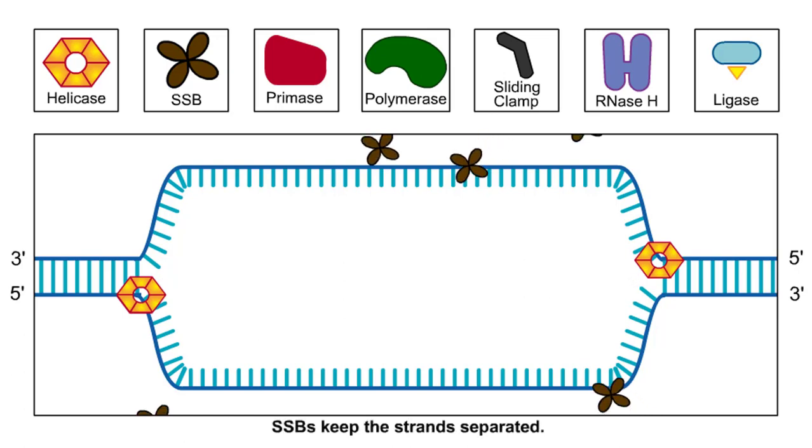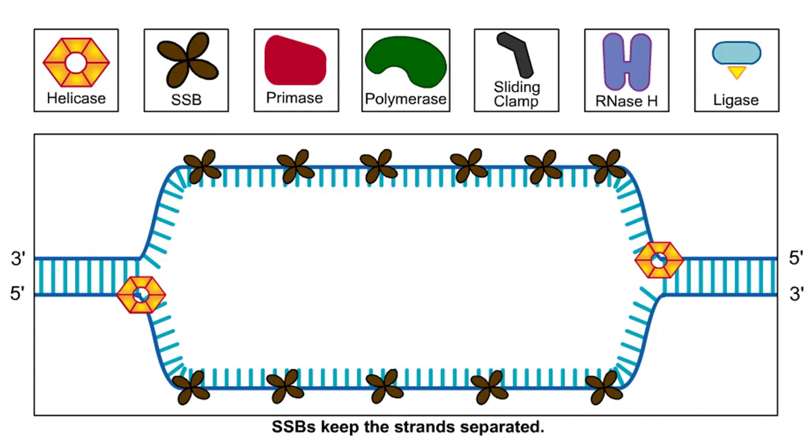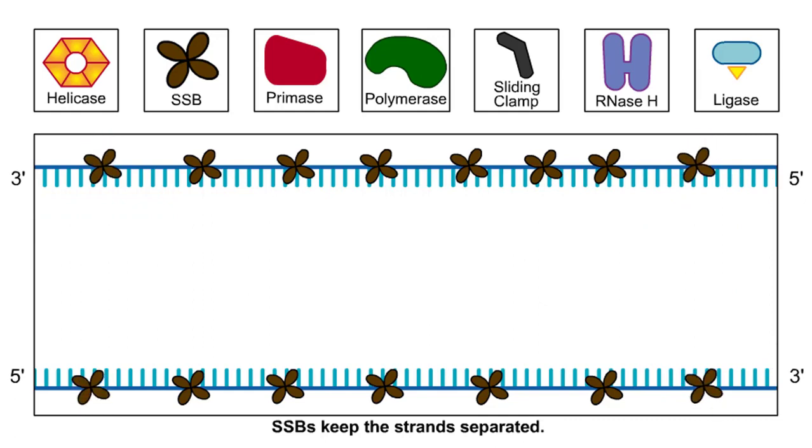Single-strand binding proteins, or SSBs, coat the single DNA strands to prevent them from snapping back together. SSBs are easily displaced by DNA polymerase.